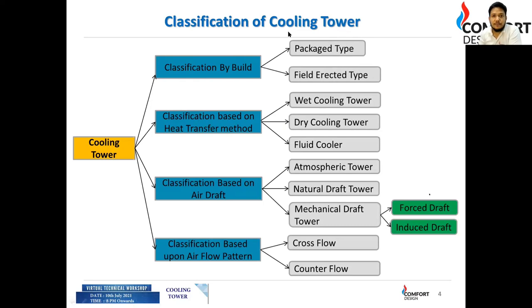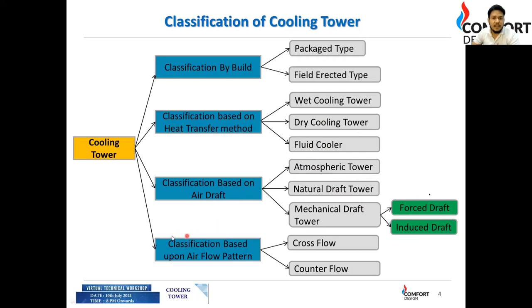Second, classification based on heat transfer mode: wet cooling tower, dry cooling tower, or fluid cooler. Third, classification based on air draft type: atmospheric tower, natural draft tower, and mechanical draft tower. Mechanical draft towers are further divided into forced draft and induced draft. Fourth, classification based on air flow pattern: cross flow or counter flow.